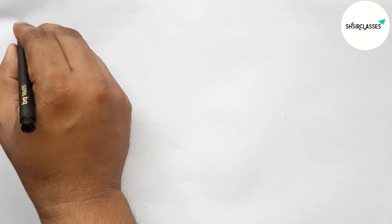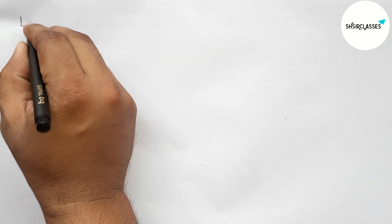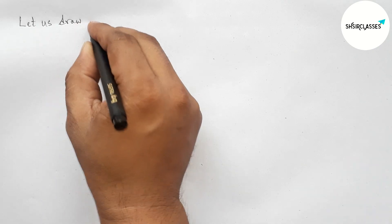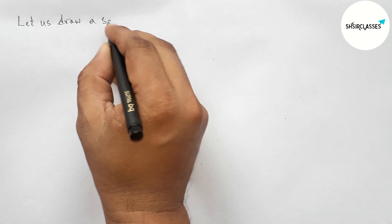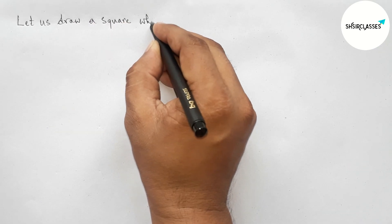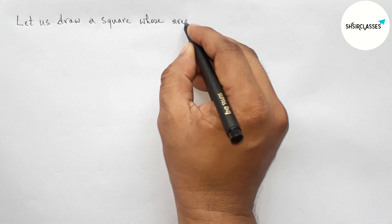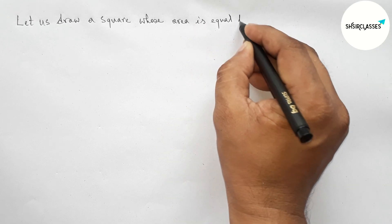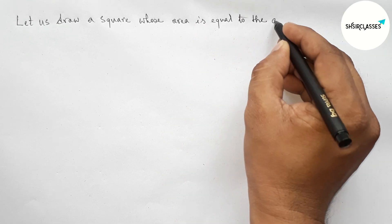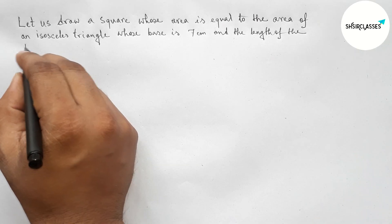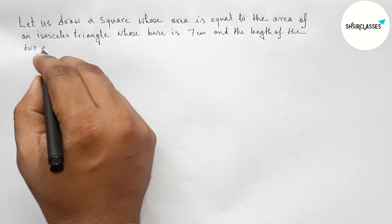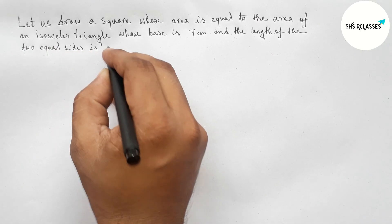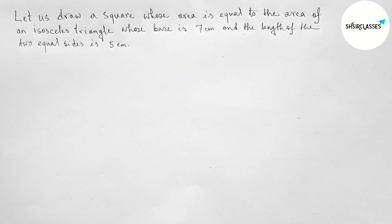Hi everyone, welcome to Essay Share Classes. Today in this video, let us draw a square whose area equals the area of an isosceles triangle whose base is 7 centimeters and length of equal sides is 5 centimeters, in an easy way. Please watch the video till the end. Let's start.